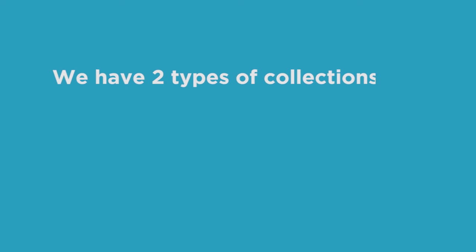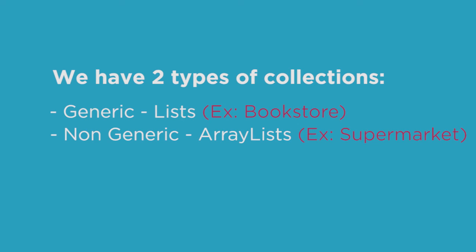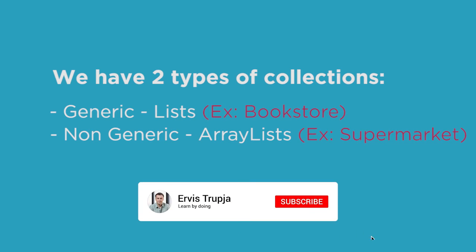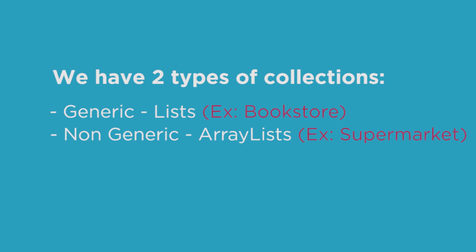In C# we have two types of collections: generic collections and non-generic collections. A generic collection is a collection which has items of similar type — for example, a list, or in real world terms, a bookstore which has only books. A supermarket which has items of different types would be an example of non-generic collections.